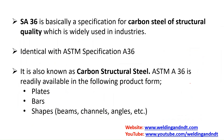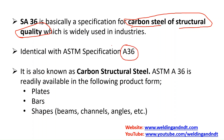SA36 steel is basically a carbon steel used for structural application — we can say carbon steel of structural quality. SA36 and A36 are both the same or identical specifications. In ASTM, any material is specified using the prefix 'A', so A36 is an ASTM material. When we write SA36, this material is given in ASME Section. Both are identical — either SA36 or A36 refers to the same specification, one used in ASTM and the other in ASME.